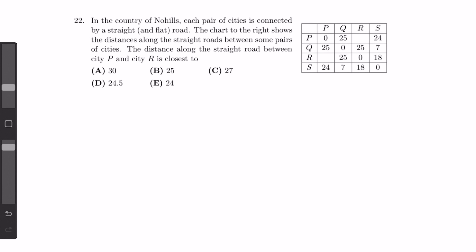In the country of Nohalth, each pair of cities is connected by a straight road. The chart to the right shows the distances along the straight roads between pairs of cities. The distance along the straight road between city P and city R is closest to: A) 30, B) 25, C) 27, D) 24.5, E) 24.